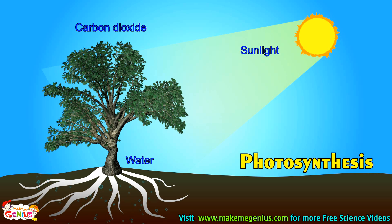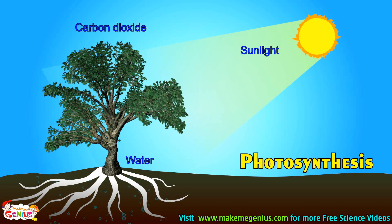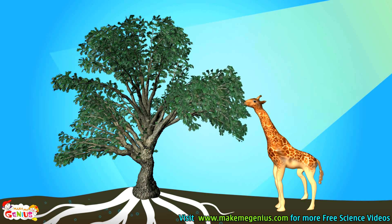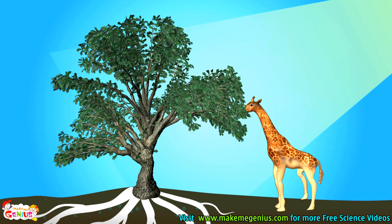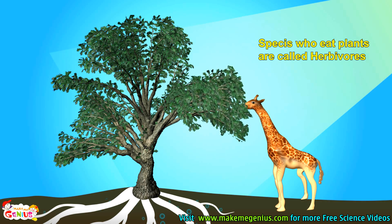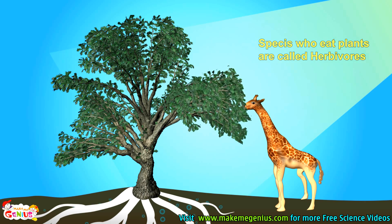So now you know plants make their own food. All other species, like animals and we humans, are dependent on plants. Now see, a giraffe is coming. It is eating the plant. Species who only eat plants are called herbivores.